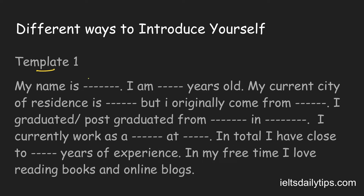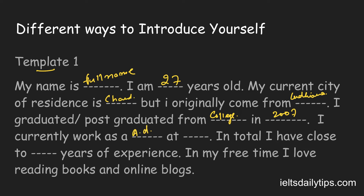My name is [your full name]. I am [your age] years old. My current city of residence is [city where you reside] — for example, Chandigarh — but I originally come from [your hometown], for example, Ludhiana. I graduated or post-graduated from [name of your college] in [year], for example, 2007. I currently work as [your designation], for example, an administrative officer, at [company name], for example, Telecom. In total I have close to [years] of experience — for example, 10 years. And in my free time I love reading books and online blogs.